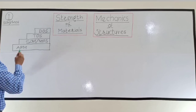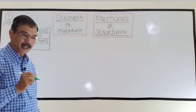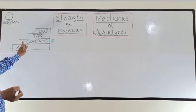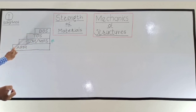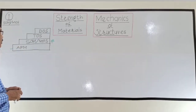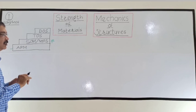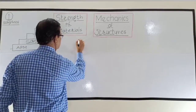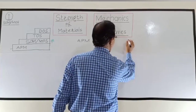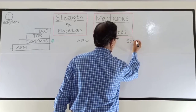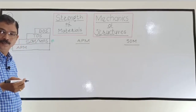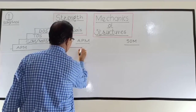In the first year you studied Applied Mechanics, so Applied Mechanics is the prerequisite for SOM and MOS. This year we will be studying SOM and MOS, which will be the prerequisite for the next steps. Now let us consider the example of a body to understand the difference between Applied Mechanics and Strength of Materials.